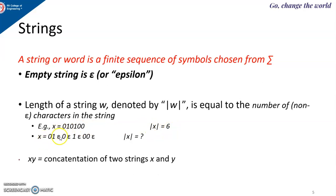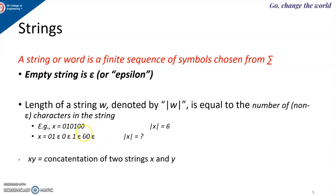I can assume that the empty string epsilon can be present anywhere in the string — after 0, after 1, after 0, after 0, and so on. Even then, the length of the empty string is 0, so the length of x will remain the same: six.